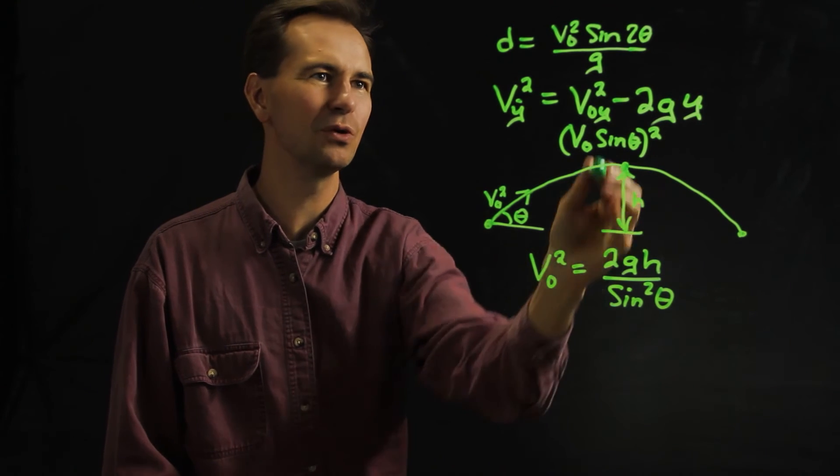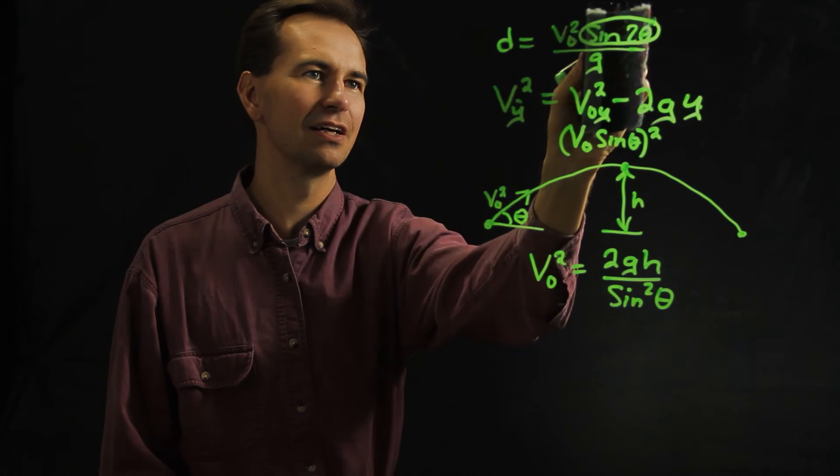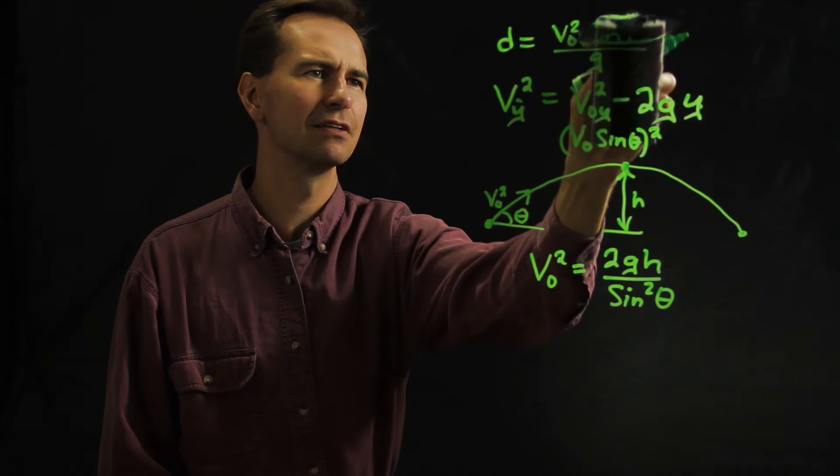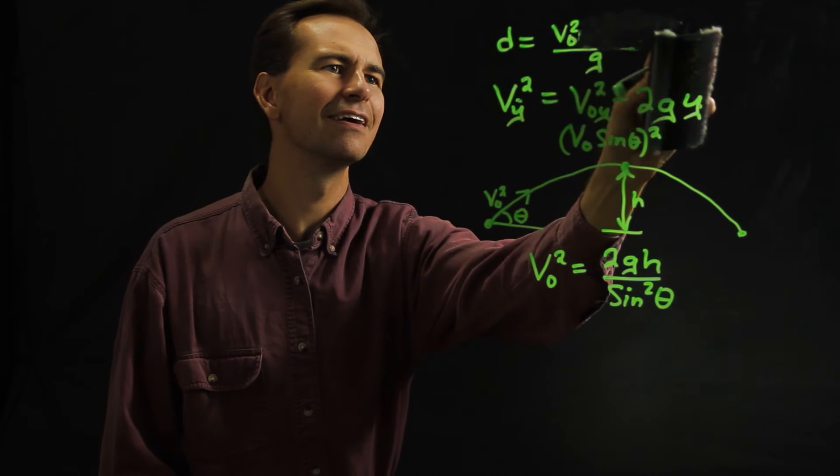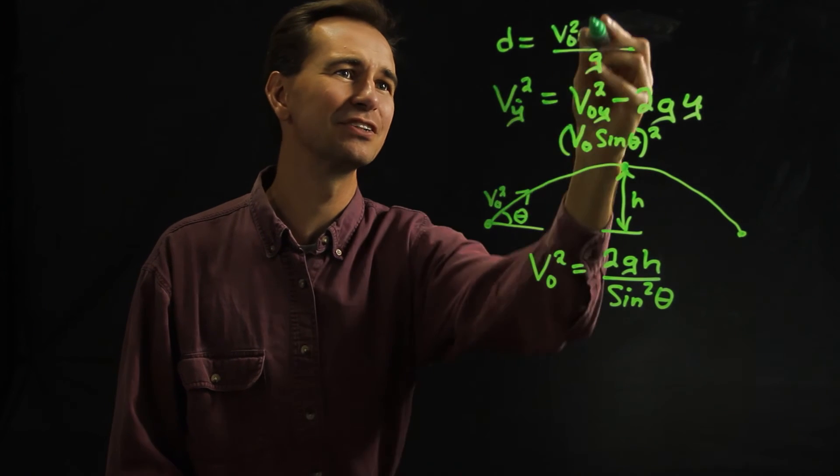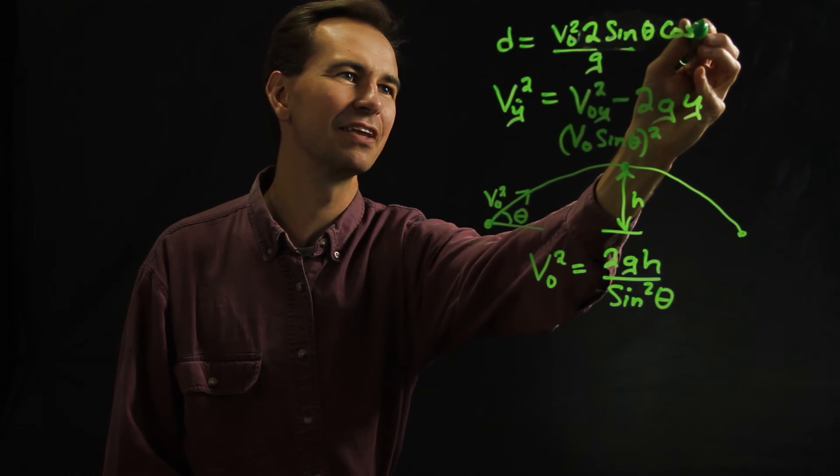Now we can do something kind of cool. We can take this sine of 2 theta and use an identity that says that is the same as 2 times the sine of theta times the cosine of theta.